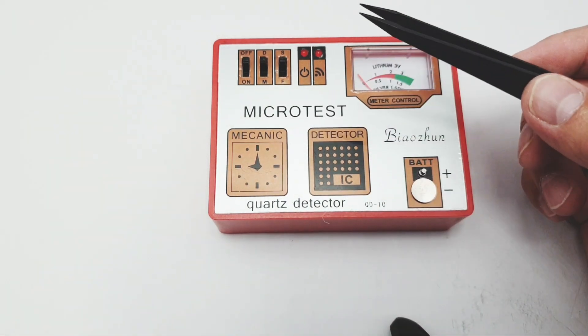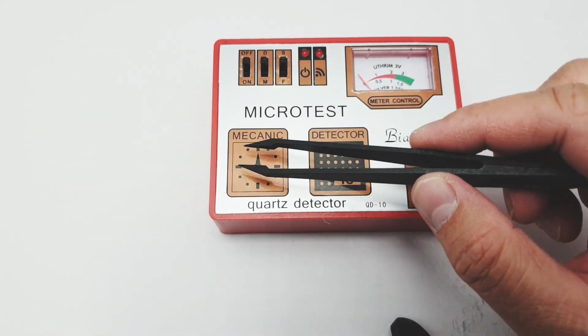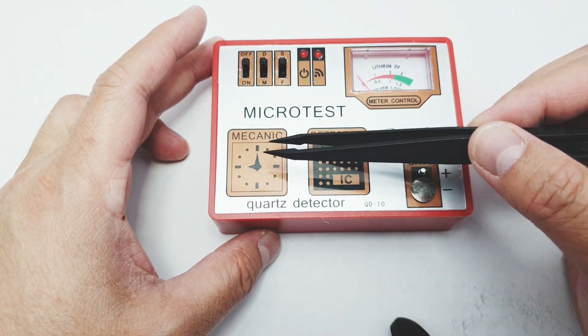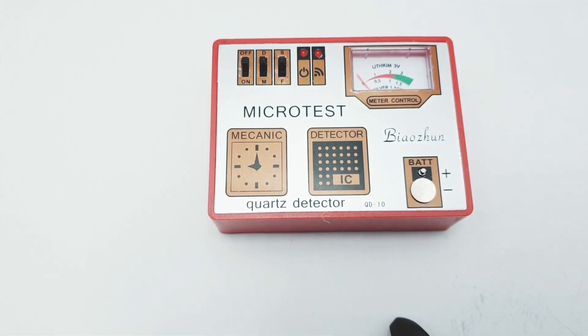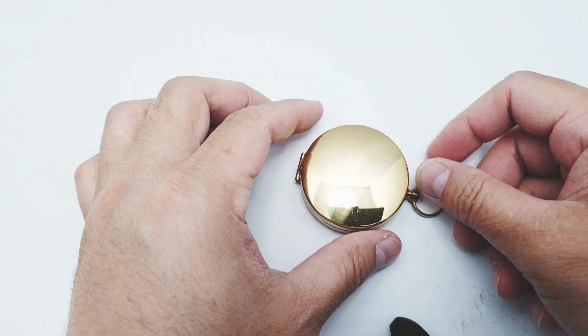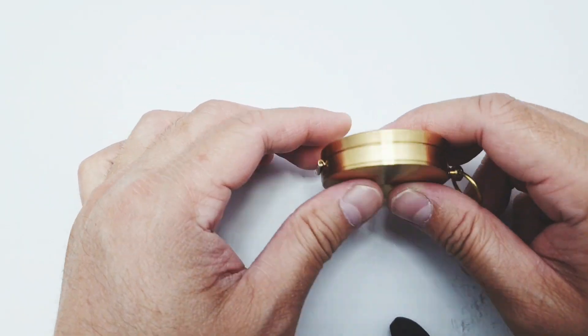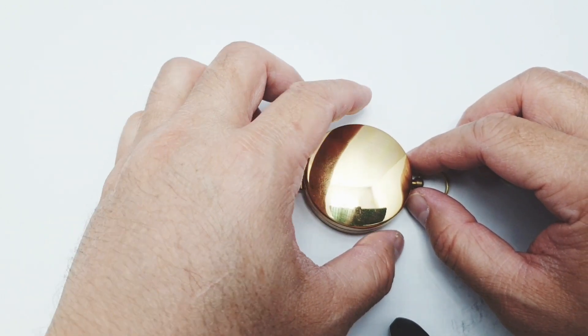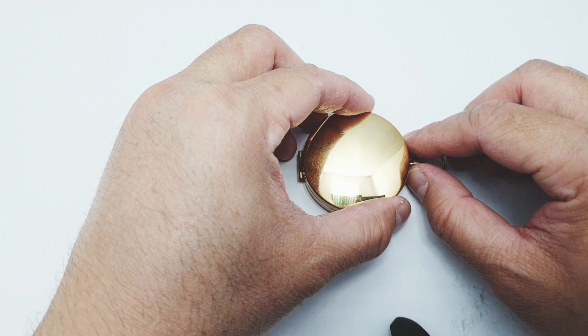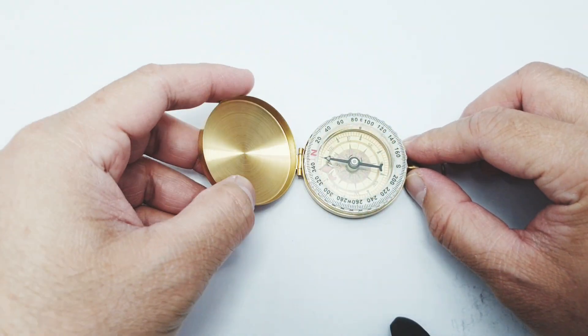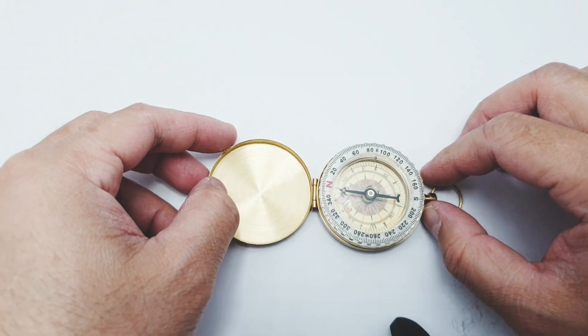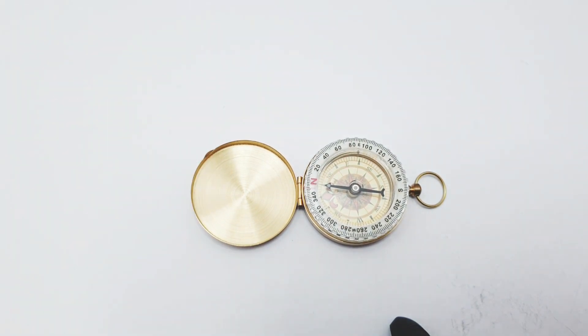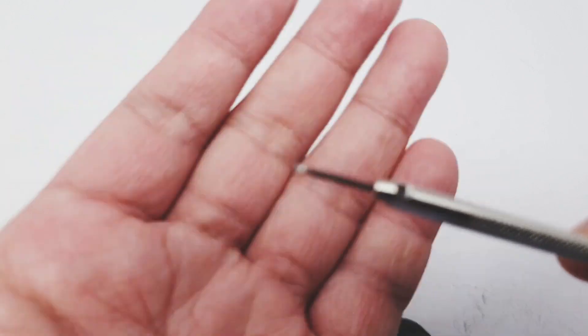Now here's another function, a hidden function in this tester, and it's called the demagnetization. Now to use this demagnetization function we also need to know if the watch or the thing that we're going to test for magnetism is magnetized, so we're going to use my compass or any compass that you have. For me I actually bought this compass just for the purpose of testing if my items are magnetized or not.